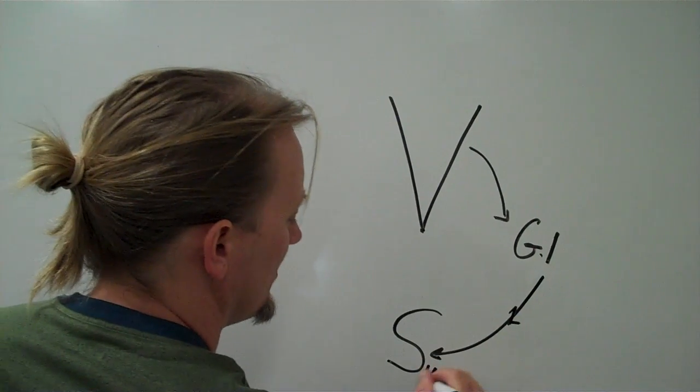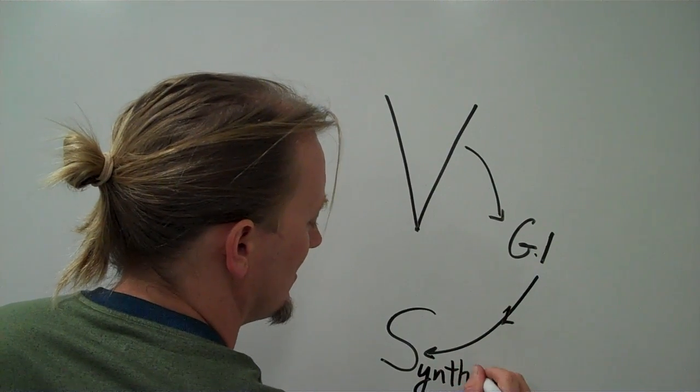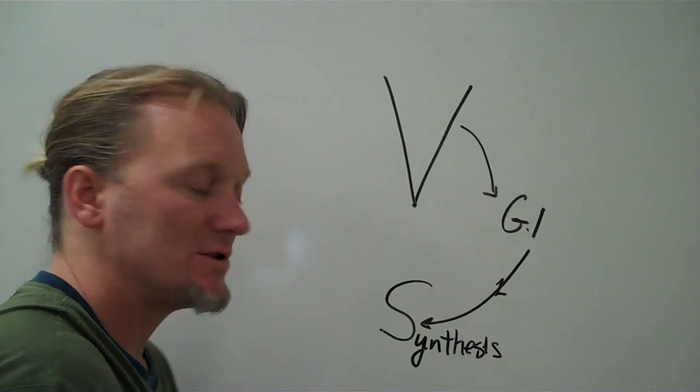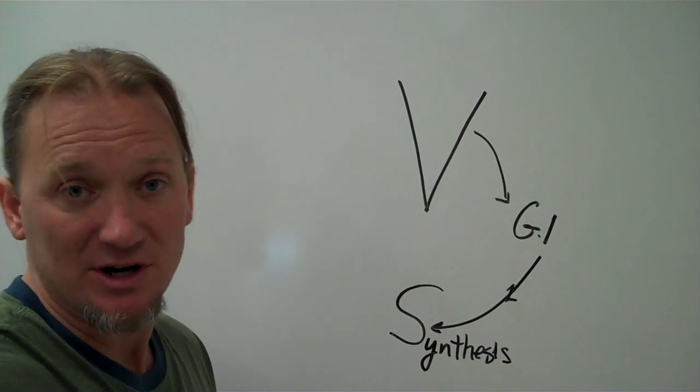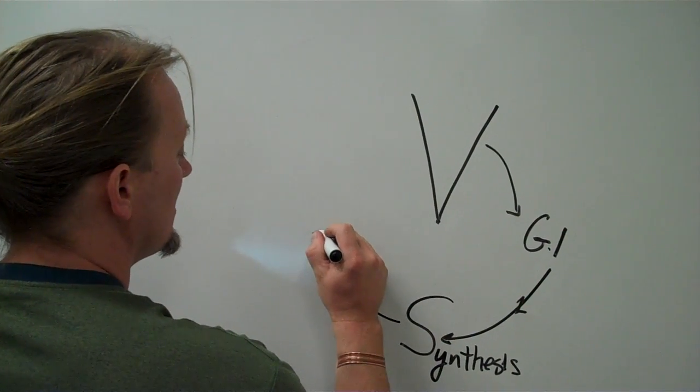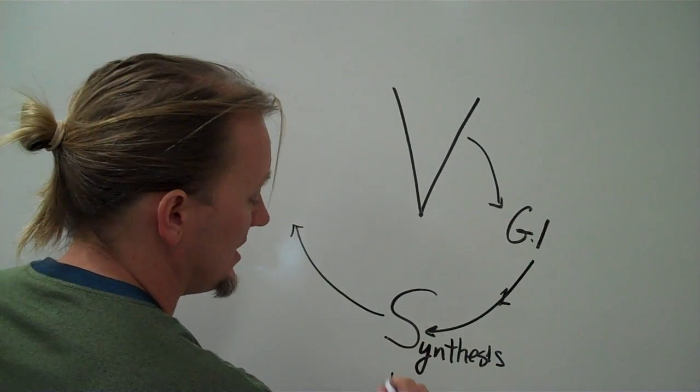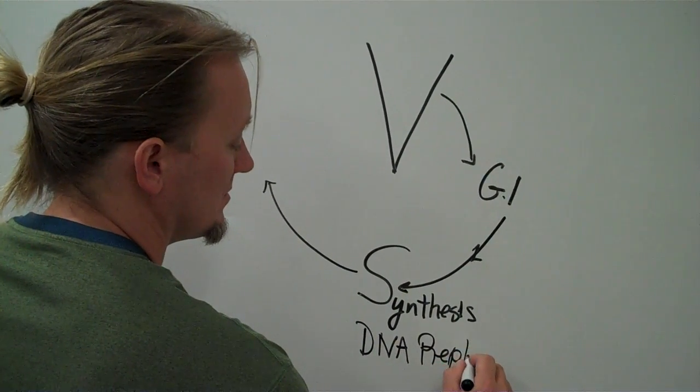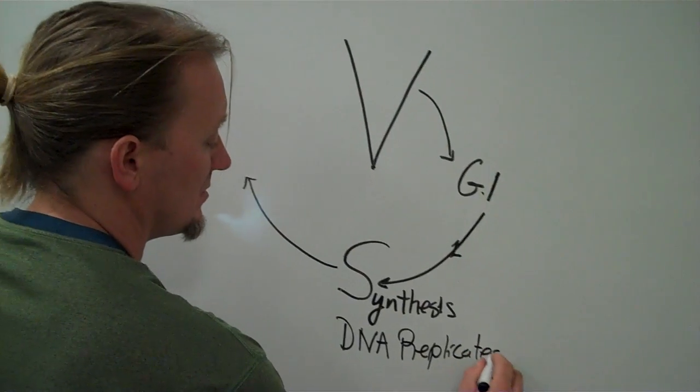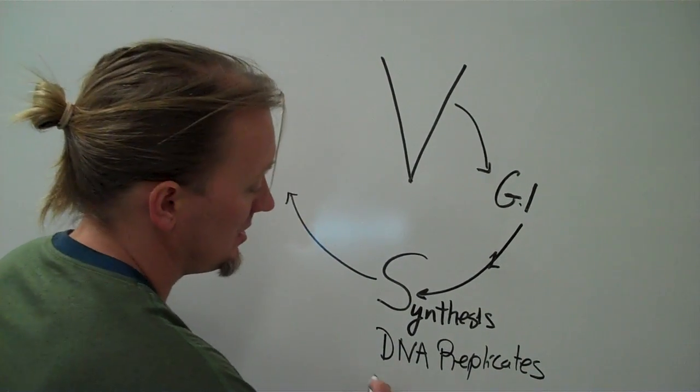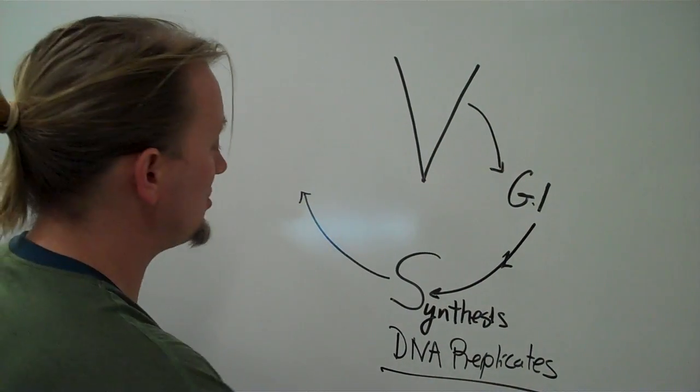The S phase also means synthesis. Now synthesize means to make, right? We talk about synthetic things, fabrics that are made, for example. This is synthesis. I should tell you that here DNA replicates, is replicated, by the cellular machinery. So this is where the DNA duplication occurs.